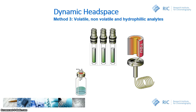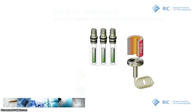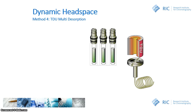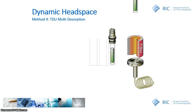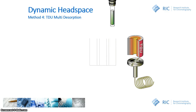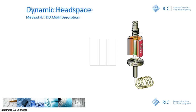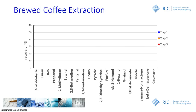After the dynamic headspace sampling, each tube is desorbed in the TDU in sequential mode. First the first tube is placed and desorbed, then while keeping the CIS cold, the second and third tubes are also desorbed. This is what we call the TDU multi-desorption mode.